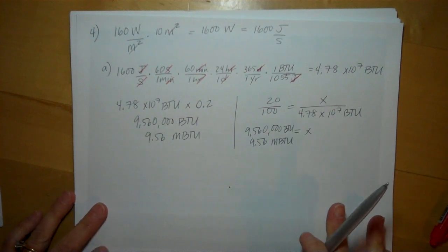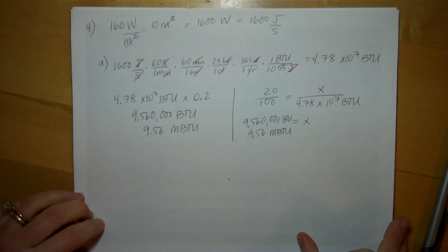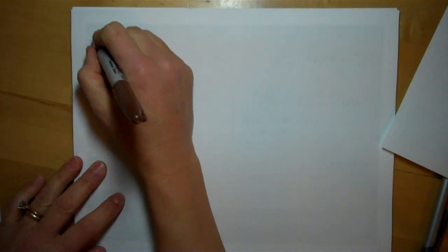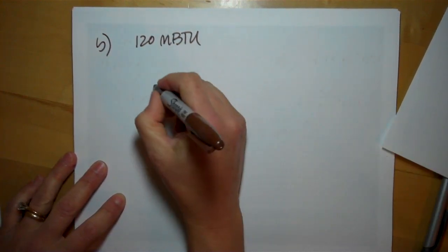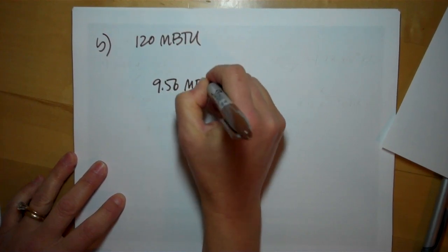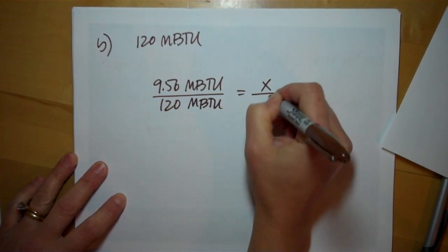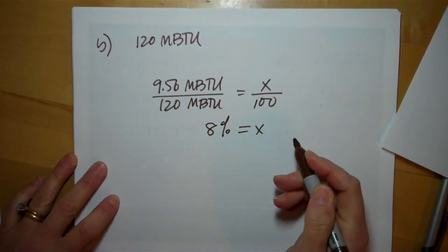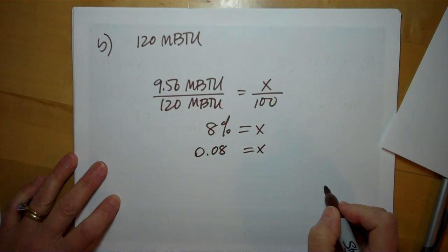Now question B asks: what fraction of our total annual heating requirement is this? If you recall from the problem above, we needed 120 mega BTUs to heat that house, but our solar panel is only producing 9.56 mega BTUs. If you look at this simple proportion, this is X percent of 120, which turns out to be only about 8% of our heating requirement. It's not much, but it's better than nothing.